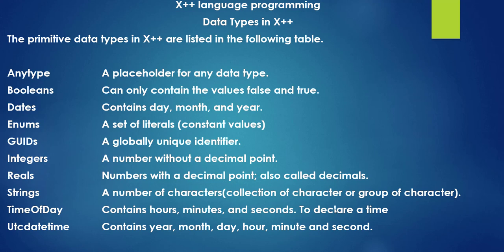Next data type is Enums, a set of literals or constant values that cannot be changed. Next we have GUIDs, a globally unique identifier.